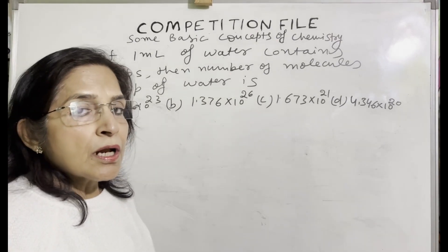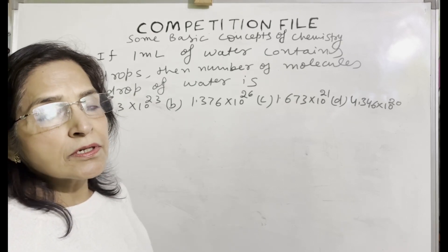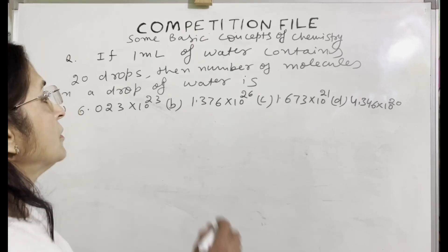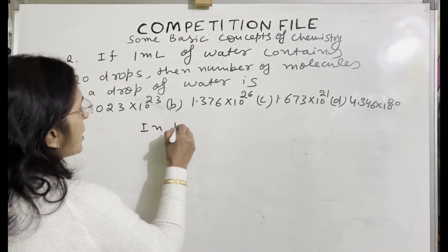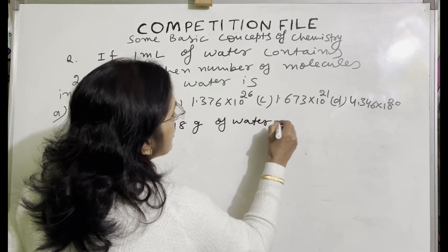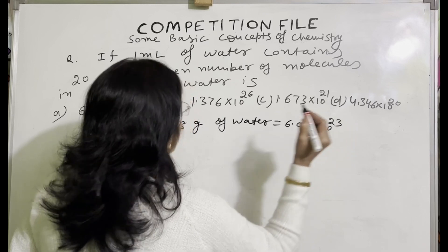We know in 18 grams of water, how many molecules are present? Avogadro number. What is 18 grams? Gram molecular mass of water. So in 18 grams of water, number of molecules are 6.02 into 10 raise to the power 23.